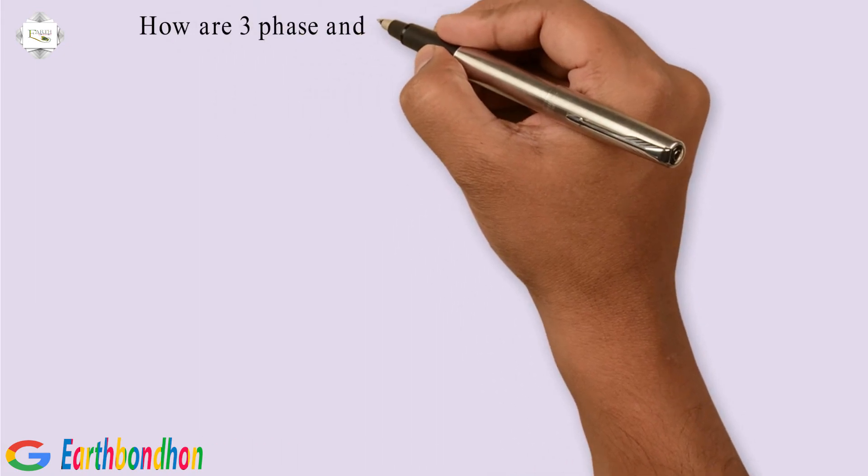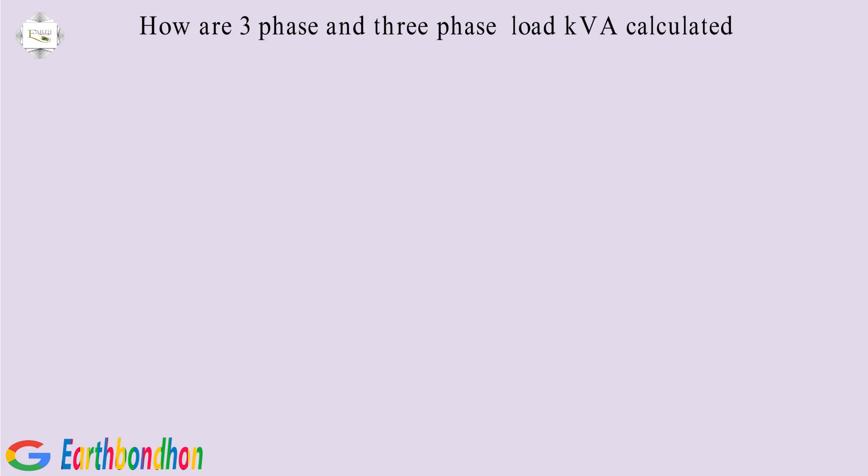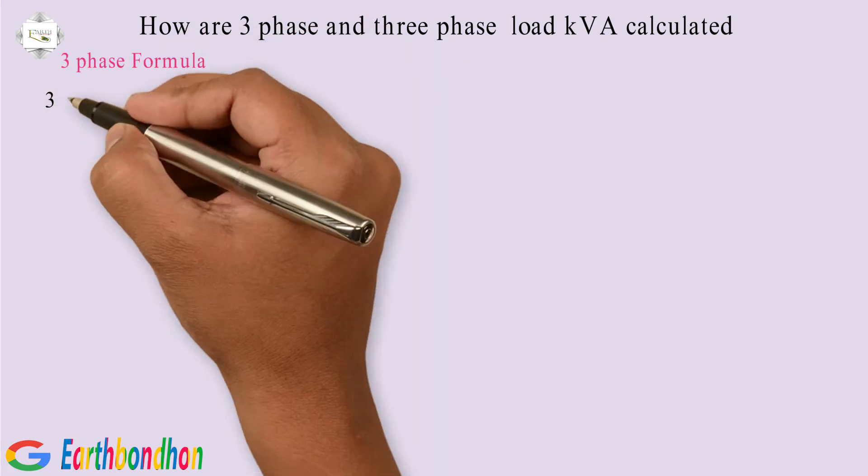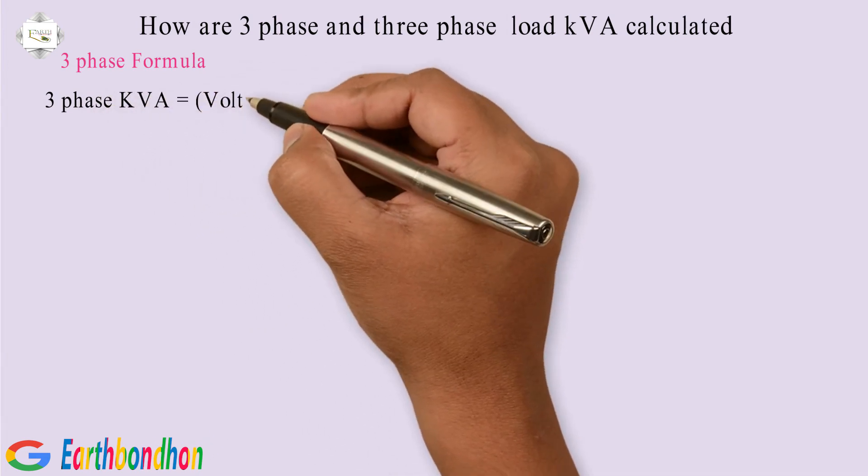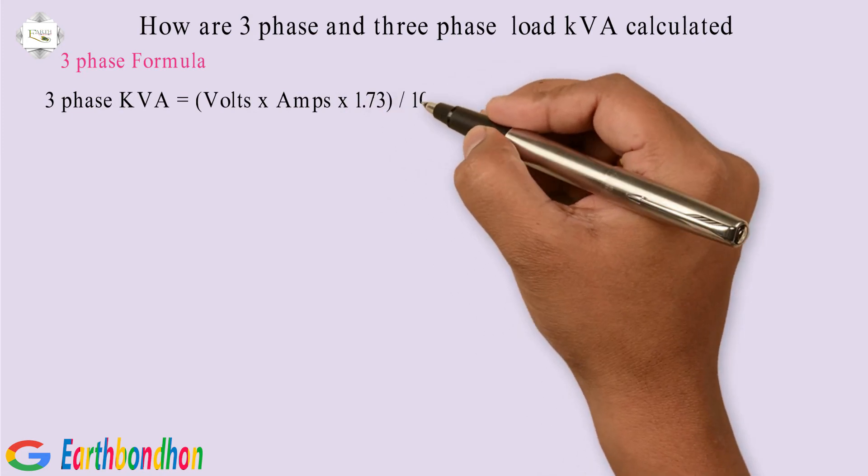Three Phase Load KVA Calculated. How are Three Phase and Three Phase Load KVA Calculated? Three Phase Formula: Three Phase KVA equals volts multiplication amps multiplication 1.73 division 1000.